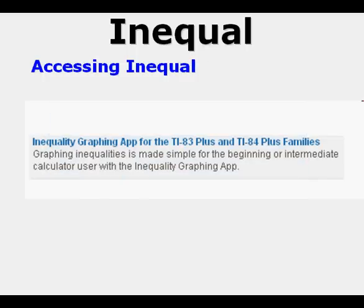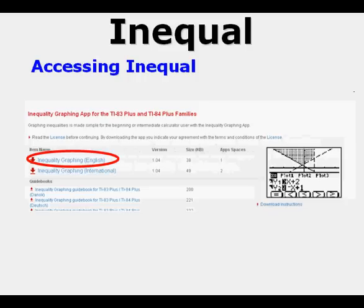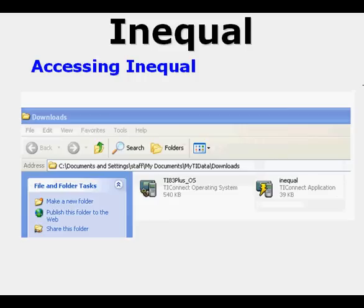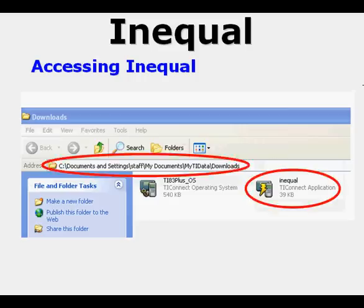And then I went to Inequality Graphing App, chose that, and I got this view, and I chose Inequality Graphing English. And from there, what I did is I downloaded it, and you can see it says save to, and I put it inside this folder. Now, you already have to have TI Connect on your computer to be able to have a place for InEqual to go for you to, from there, put it into your calculator.